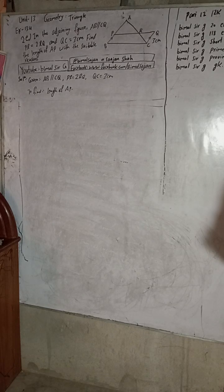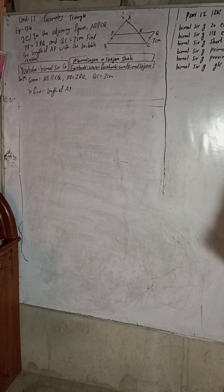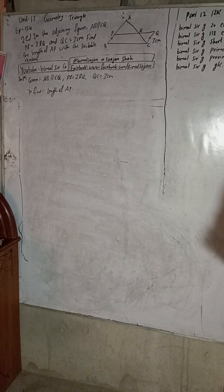Class 9 and 10 students, welcome back to Bimalsarji YouTube channel. This is question number 2E, Exercise 13.4, Unit 13, Geometry Triangles. Check the playlist of Bimalsarji YouTube channel — here you will find Class 9 and 10 solutions of Optional Math, Compulsory Math, and Science.